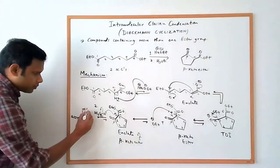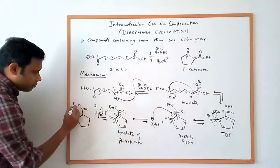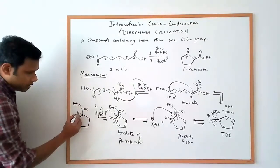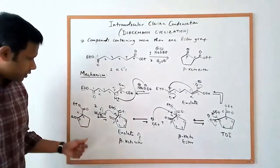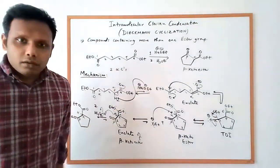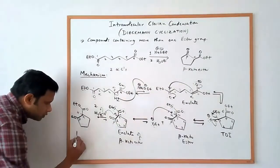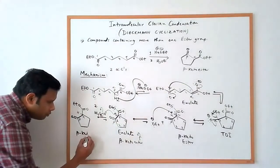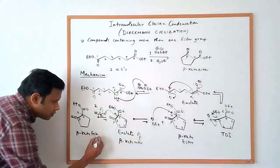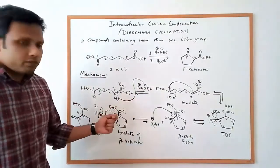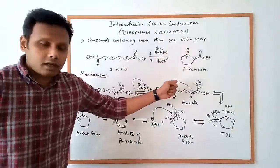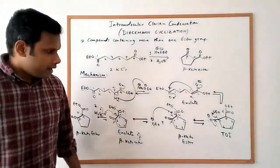And so we get our product, which is the beta-ketoester. So now we have a hydrogen here, that's our alpha carbon, that's our beta carbon. So that's how we get the beta-ketoester product. So again, we make the beta-ketoester product here. So that's the mechanism for the formation of this cyclic beta-ketoester.